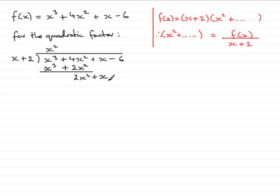We start again: what do we multiply x by to give 2x²? That's 2x, so we write that at the top.